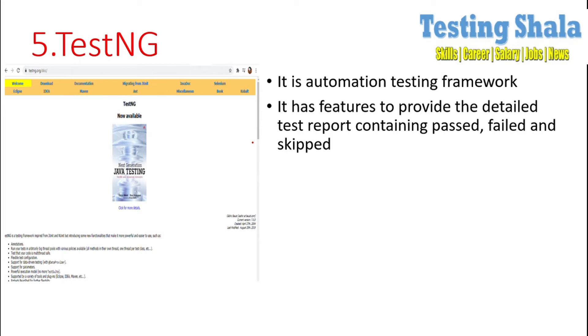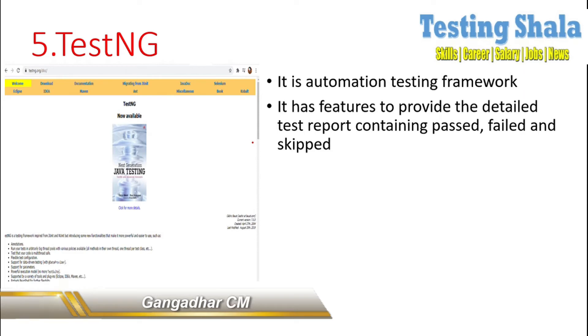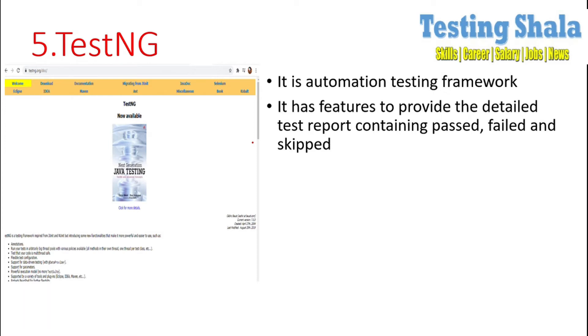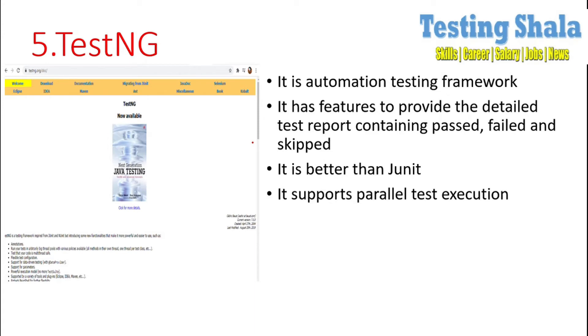The fifth automation tool is TestNG. TestNG is also a test automation framework and it has most of the features of JUnit, along with additional features such as detailed test reports containing passed, failed, and skipped results. Every result can be easily tracked and managed using TestNG, and it is a better version of JUnit. TestNG also supports parallel test execution.